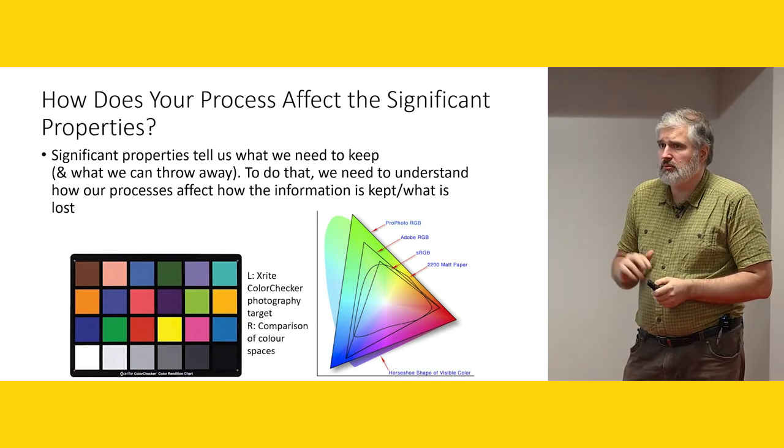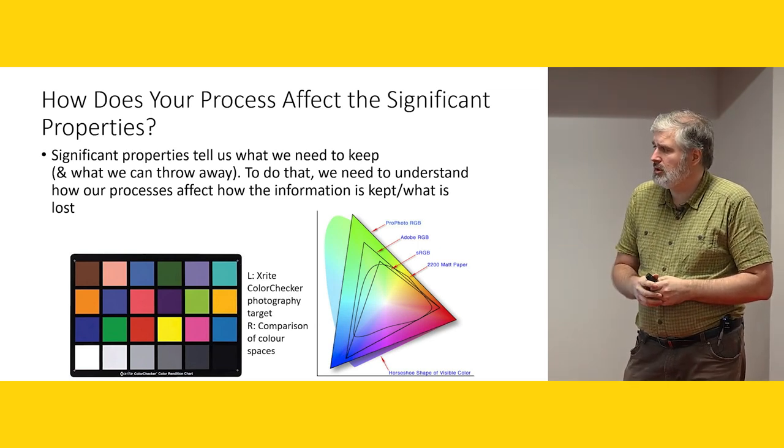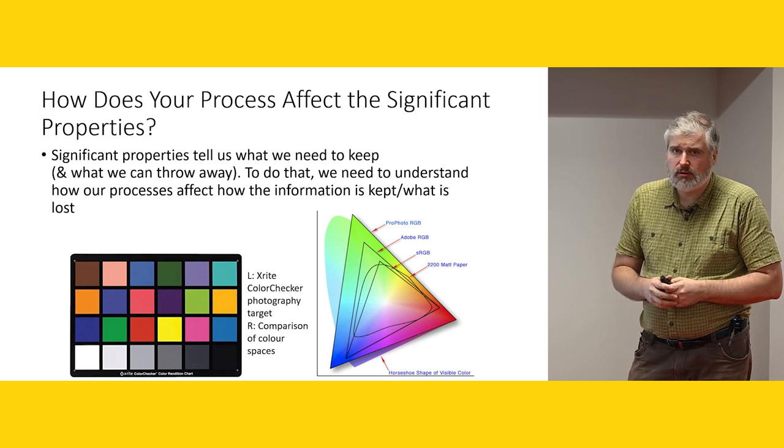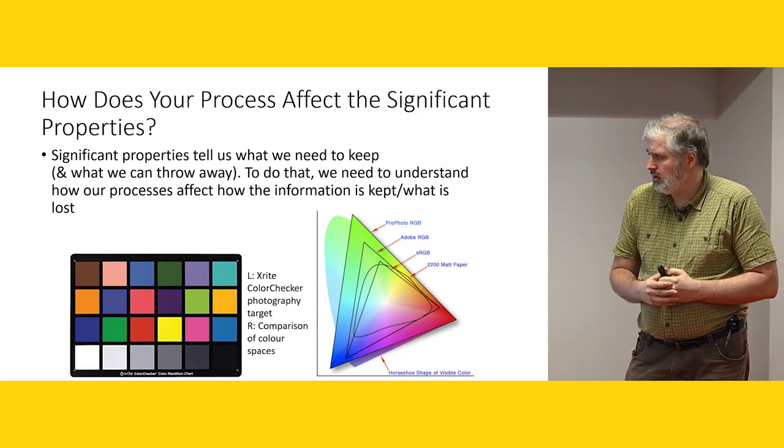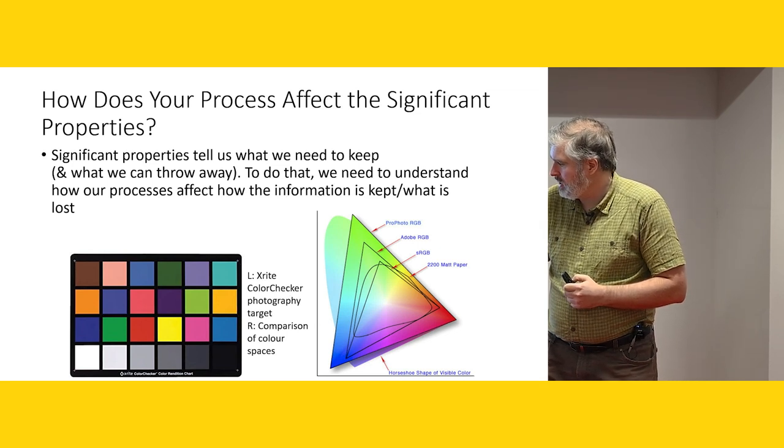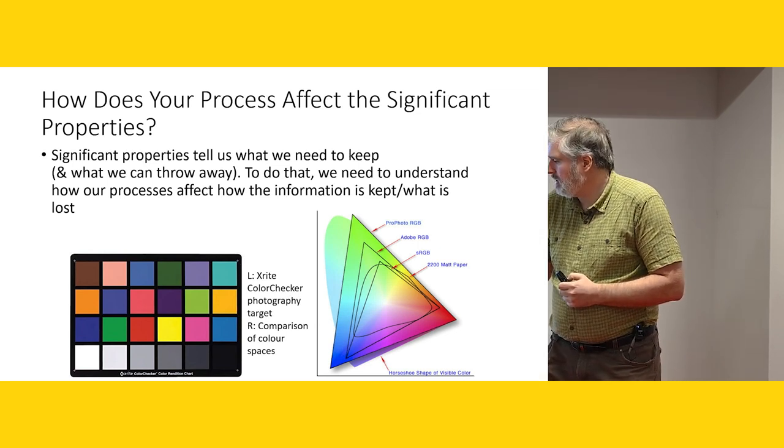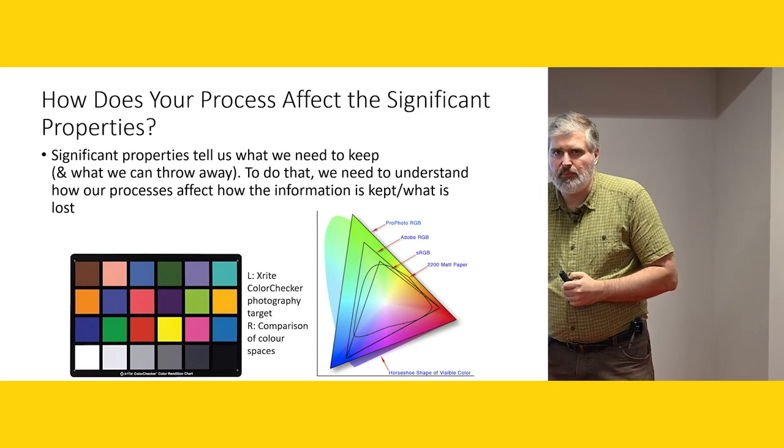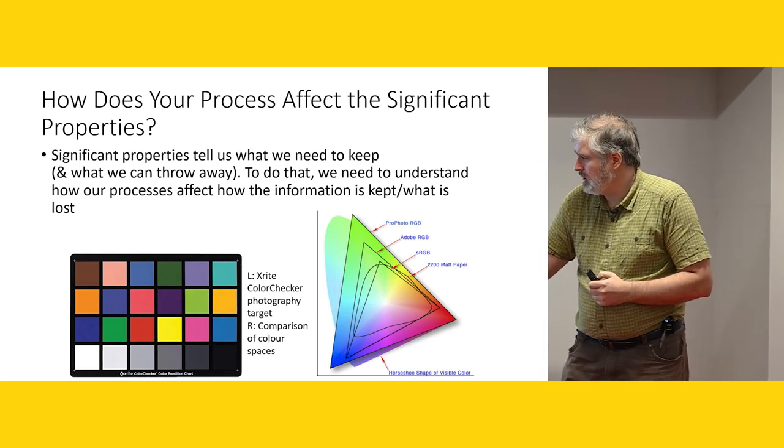And then we get into something that I wanted people to consider, which is physical properties and technical properties. So, when we consider color space, if we look here, here is what we can print on matte paper, high quality matte paper. Here is what we can see on an sRGB, a very normal monitor.